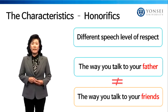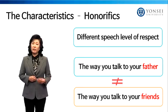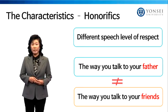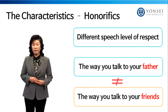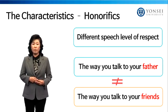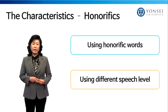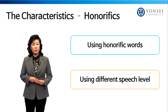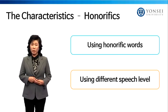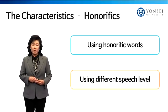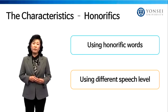Lastly, Korean is a language with honorifics. In using honorifics, there can be different speech levels of respect according to the person you are speaking with. The way you talk to your father is different from the way you talk to your friends or colleagues. For example, in English, you and your father would say 'good morning' in the same way. However, in Korean, there is a distinction between the way a father speaks to his son and the way a son speaks to his father. You can use honorific words or expressions that differentiate speech levels.